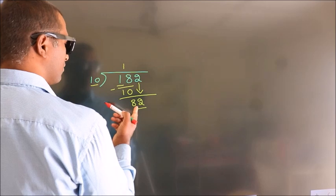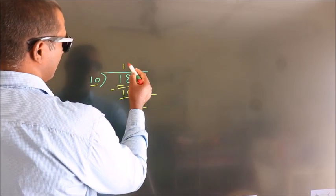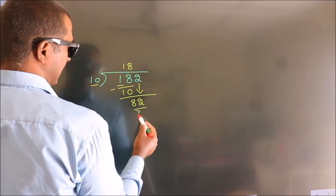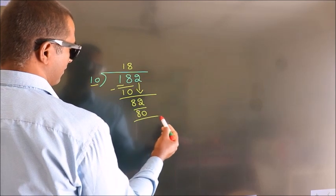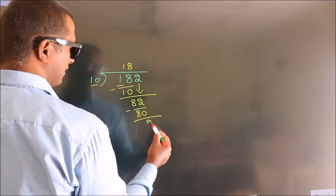A number close to 82 in the 10 table is 10 eights, 80. Now we subtract, we get 2.